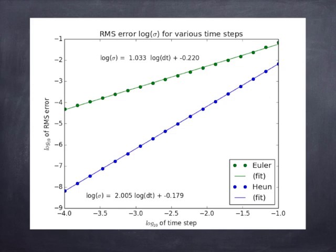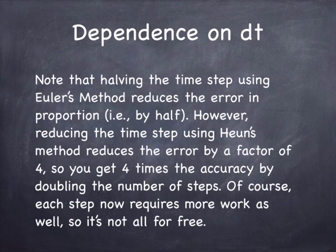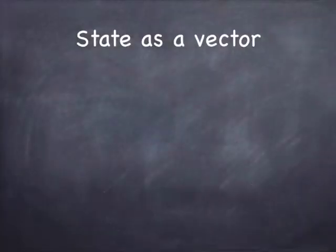So that sort of confirms our notion that the Heun method is second order and the Euler method is first order. In the notebook that you'll be using for the second project, I have a couple of programs in there that illustrate that, and you can see exactly how this graph is produced and exactly what it means. This basically says what I just said. If you use the Heun method and you halve the time step, you get four times the accuracy. If you use the Euler method and you halve the time step, you only get double the accuracy.